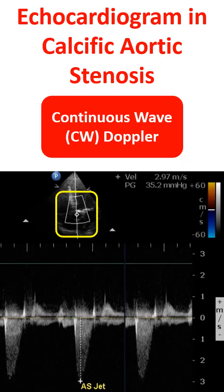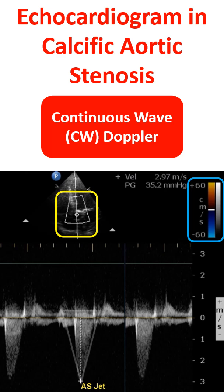The upper panel shows the color Doppler image and the Doppler line. The color bar at the top right shows the Nyquist limit of the color flow mapping system, 60 cm per second in this case. The lower panel shows the tongue-shaped envelope of valvar aortic stenosis. The peak velocity in this case is 2.97 m per second, which corresponds to a gradient of 35.2 mmHg.